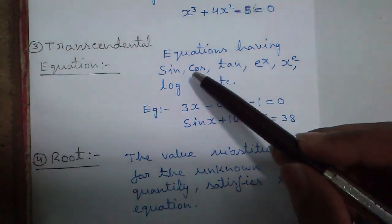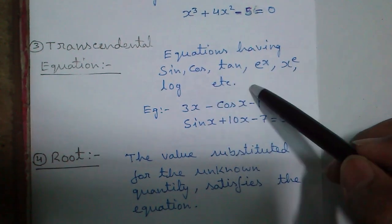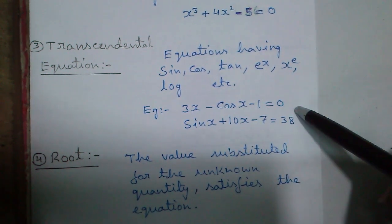Transcendental equations: Equations having sin, cos, tan, e to the x, x to the y, log, etc. are called transcendental equations. For example, 3x minus cos x minus 1 equals 0.